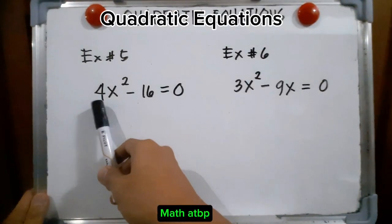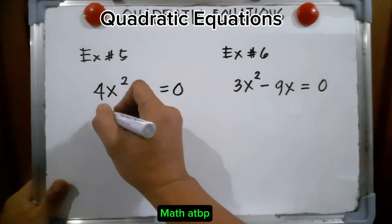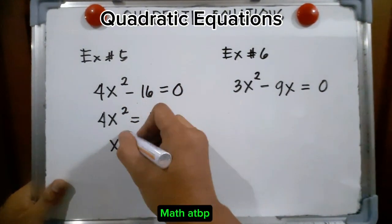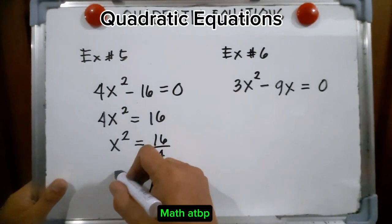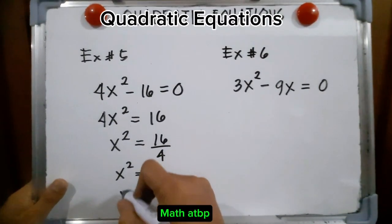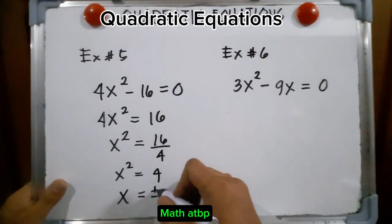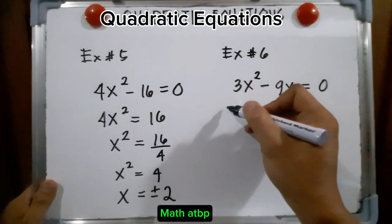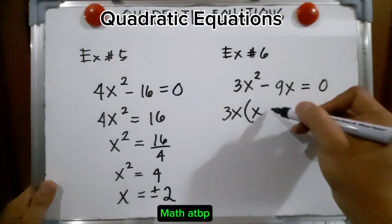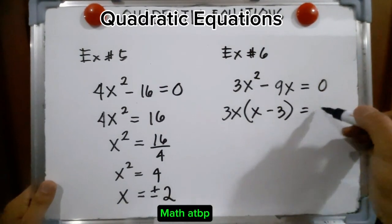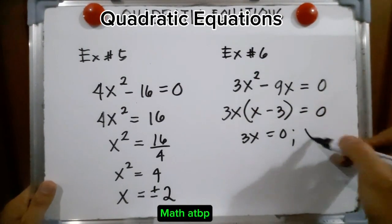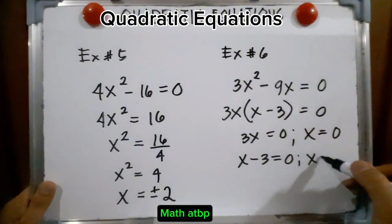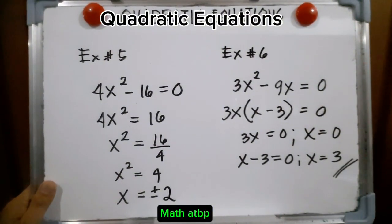We have 4x² - 16 = 0. Transposing, 4x² = 16, so x² = 16/4 = 4. Therefore x = ±2. Next, 3x² - 9x = 0. We factor out 3x, giving 3x(x - 3) = 0. From 3x = 0, x = 0; and from x - 3 = 0, x = 3. So the values of x are 0 and 3.